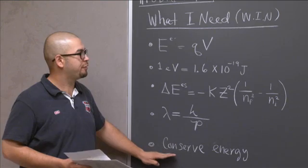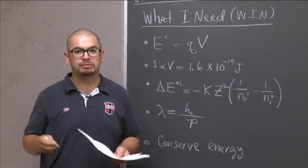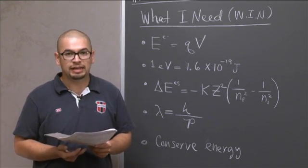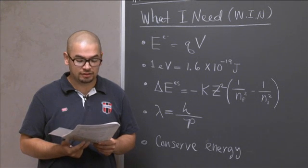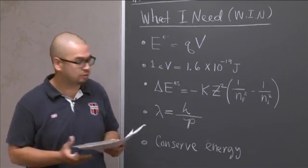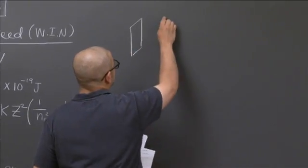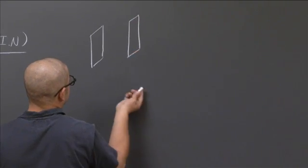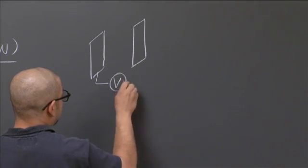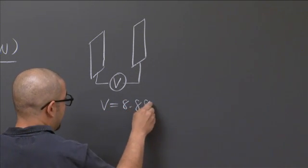This is what's going to get you the full points on the problem. So this problem is best solved if you draw a little image as you read the problem. So the problem reads, atoms of ionized helium gas, He+, are struck by electrons in a gas discharge tube operating with the potential difference between the electrodes set at 8.8 volts. So I'm going to go ahead and start drawing an image.